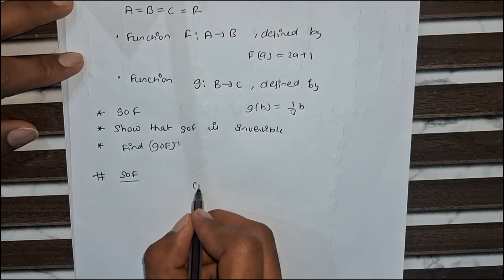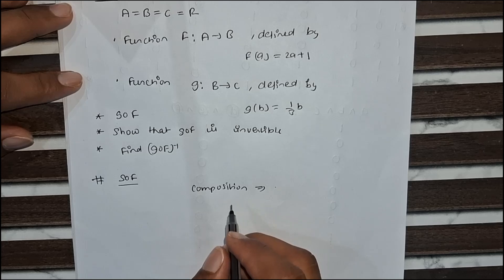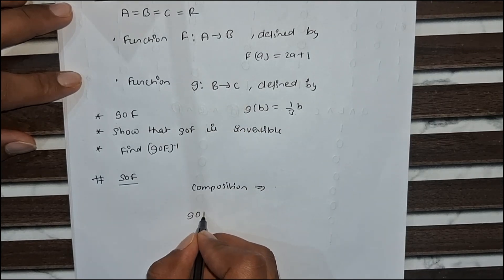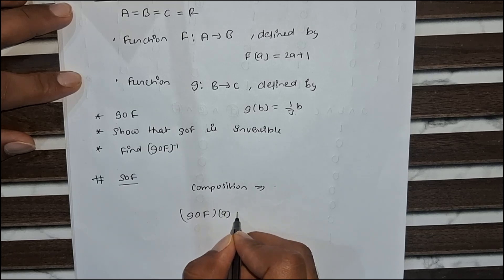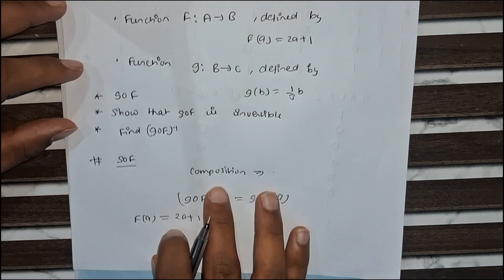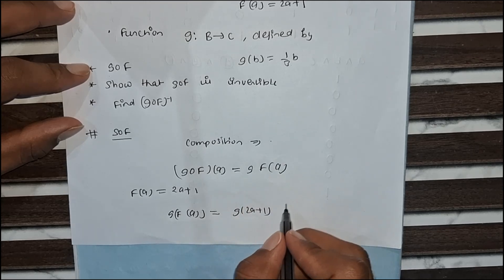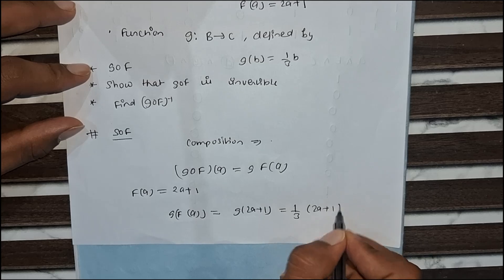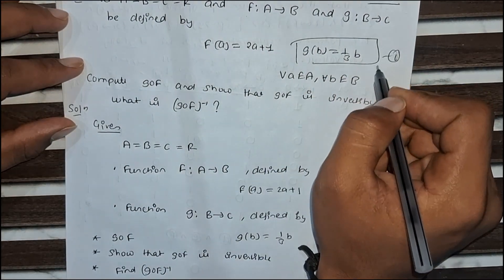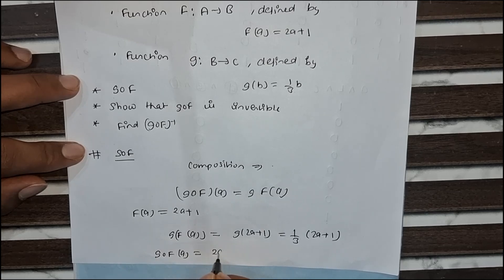By the definition of composition, since A equals B equals C equals R, both functions belong to R. The value of f(a) is 2a + 1, so g(f(a)) equals g(2a + 1), which equals (1/3)(2a + 1). Therefore g(f(a)) equals (2a + 1) / 3. This is our first result.